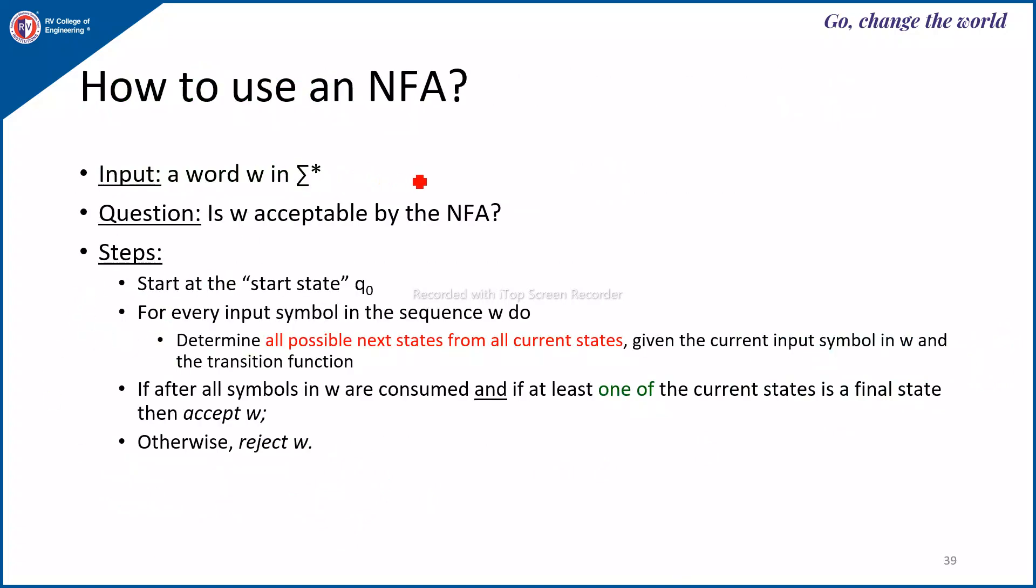How does the NFA process the string? Input is a word which is in sigma star. Is W acceptable by NFA? The procedure is you start from the start state and for every input symbol in the sequence, determine all possible next states from all the current states, given the current input symbol in W and the transition function. After all the symbols in W are consumed and if at least one of the current states is a final state, then accept W, otherwise reject. You can observe here, the machine can be in many states. So if it contains one of the final states, then that string is accepted, otherwise it is rejected.